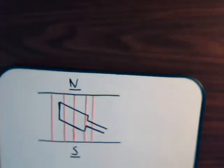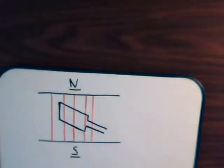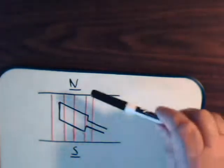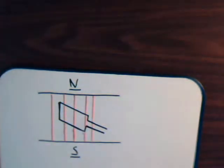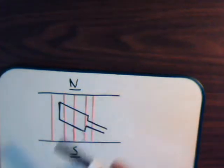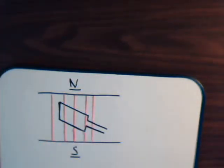Let's talk about the motion of a turbine through a magnetic field. Here we have a north pole and a south pole, with magnetic lines of field going in between. We have a rectangular shaped conductor, and the conductor is going to rotate so it's cutting through the magnetic lines of flux. As it does that, it generates an electrical current.